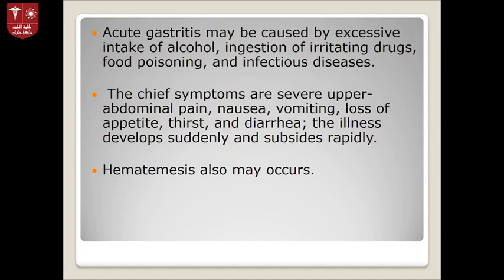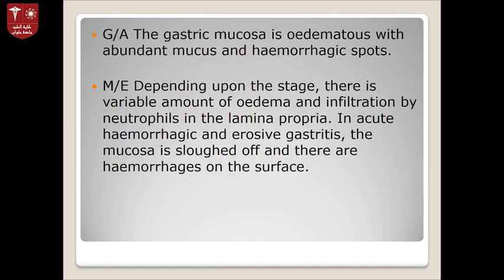Hematemesis may also occur — vomiting of blood, but not in large amounts. On gross picture, the gastric mucosa is edematous with abundant mucus and hemorrhagic spots. That is what is seen macroscopically.